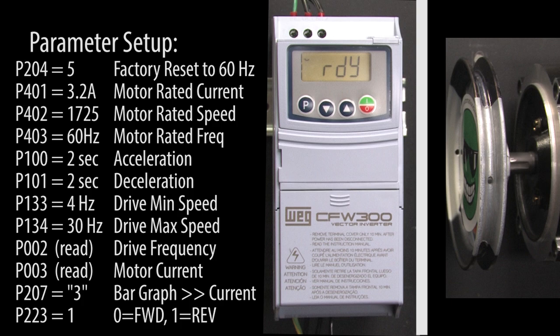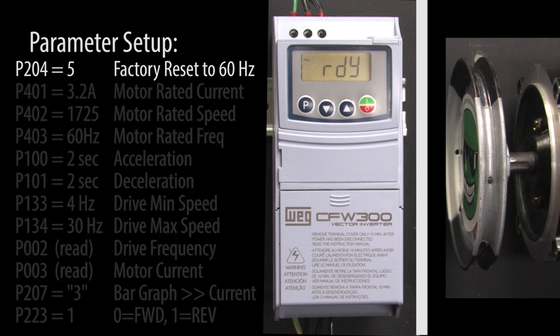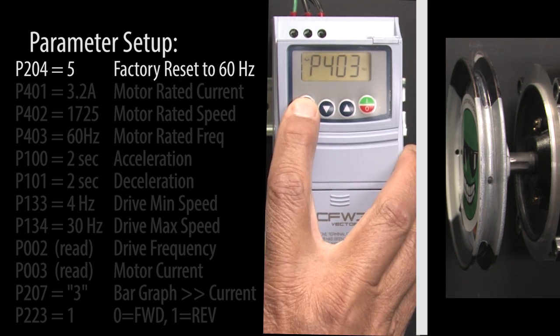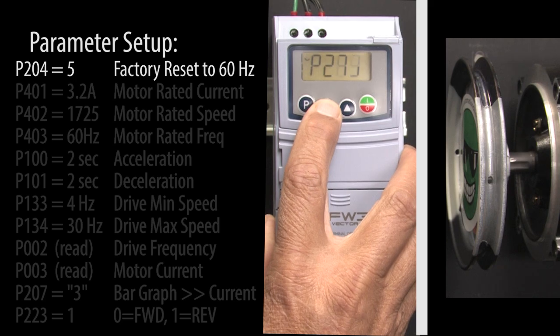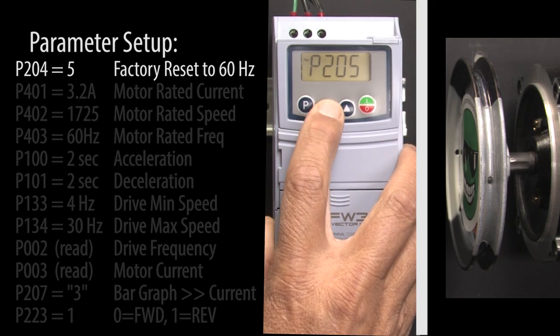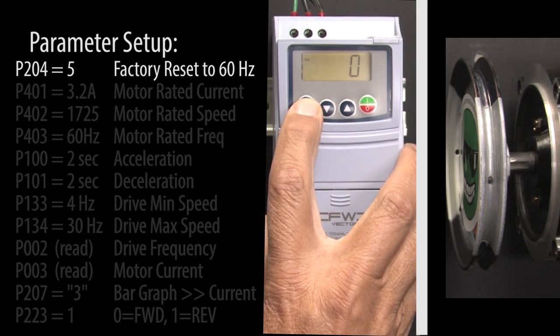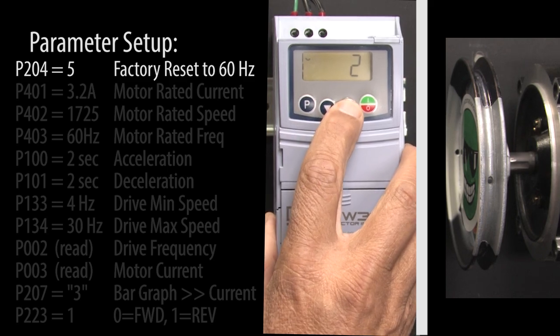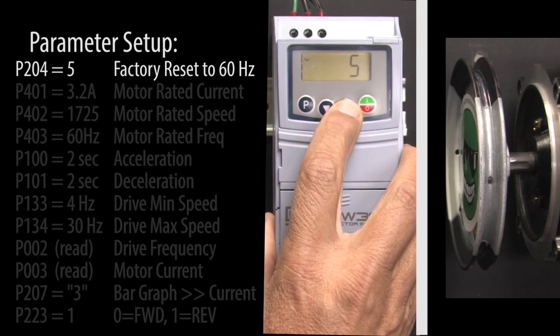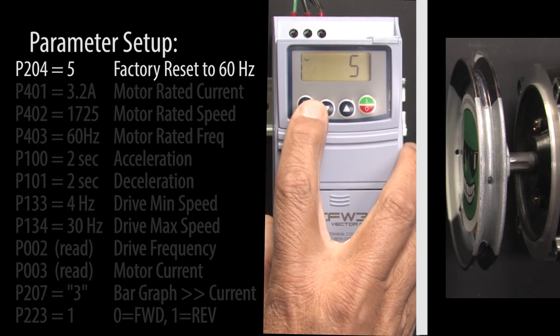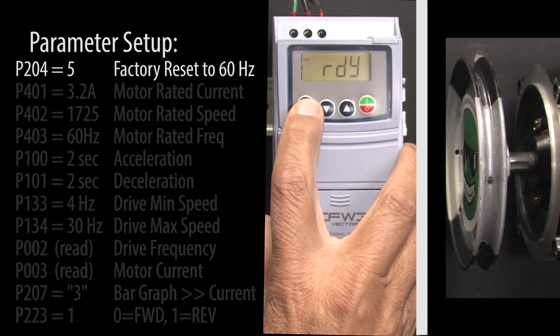Before doing anything, let's reset the drive to factory default so if you're following along we're both starting at the exact same place. Press the P button to get to the parameters and scroll to parameter 204. Hit P again so we can change the parameter to a 5, which resets the drive's parameters to factory default for 60 Hz, and press P to accept that.